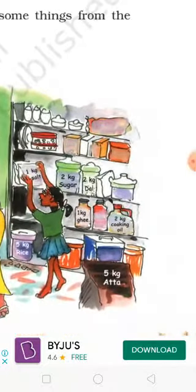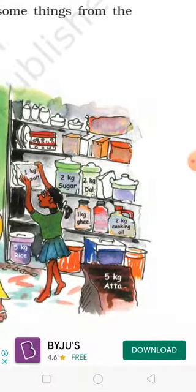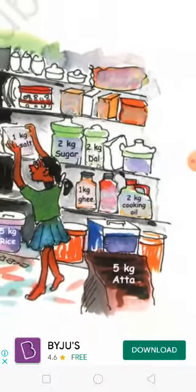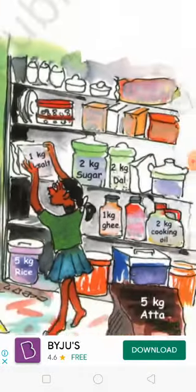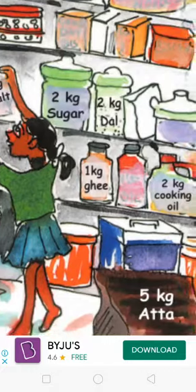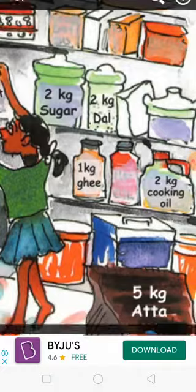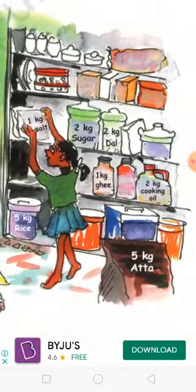Next, 2 kg sugar is in the store. Then 2 kg dal is in the store. 1 kg of the store. Cooking oil — 2 kg of cooking oil. What do we use at the store? We use the items in the store. You can carry it.